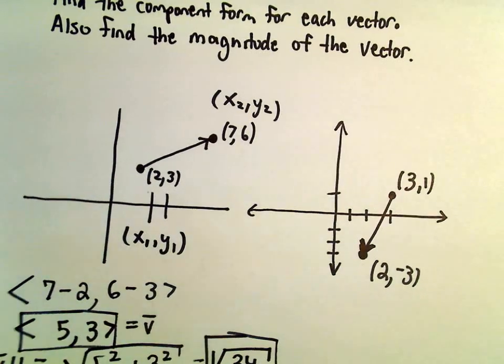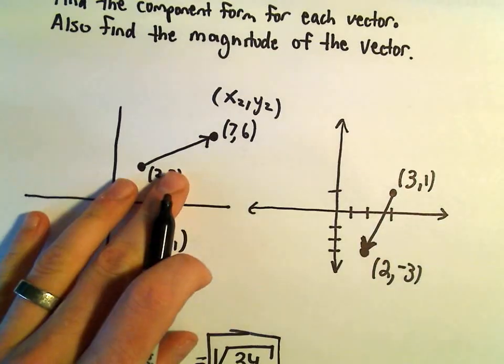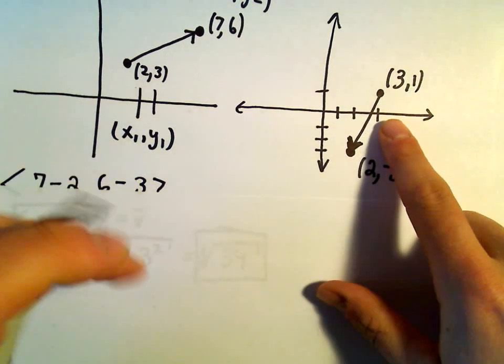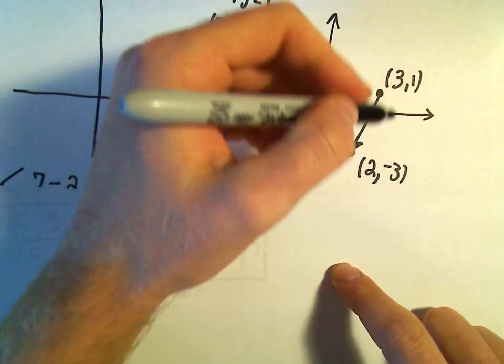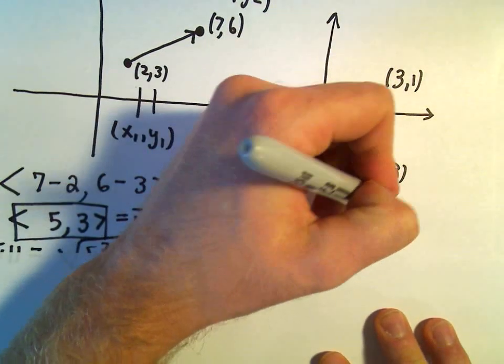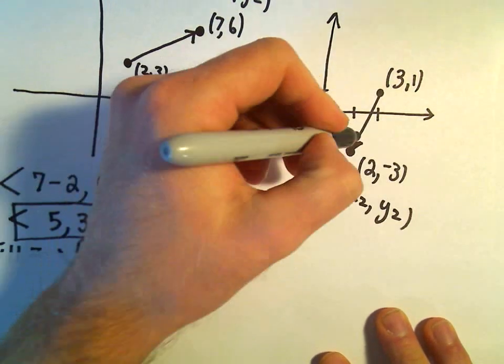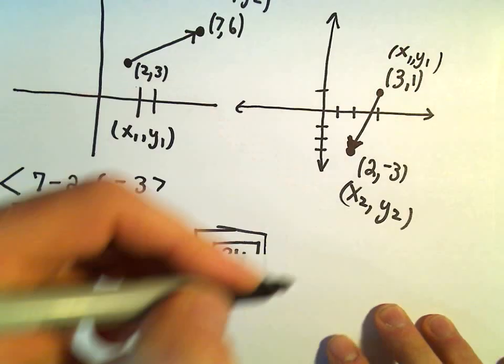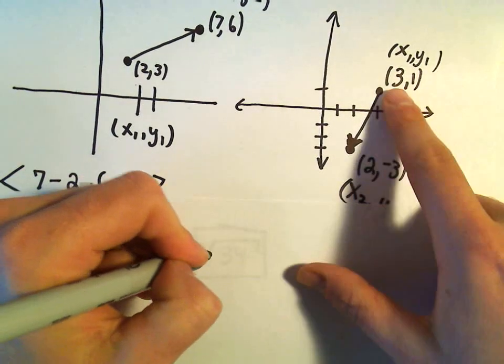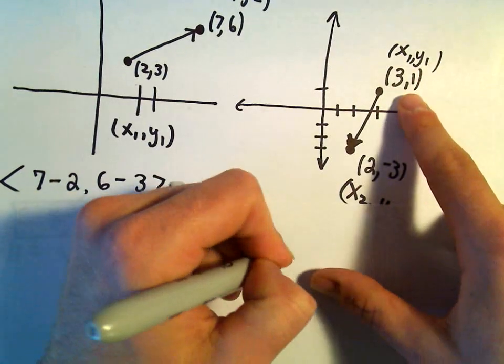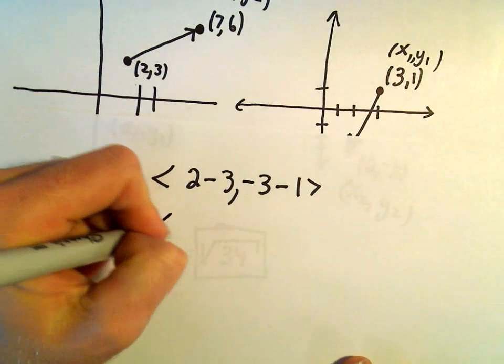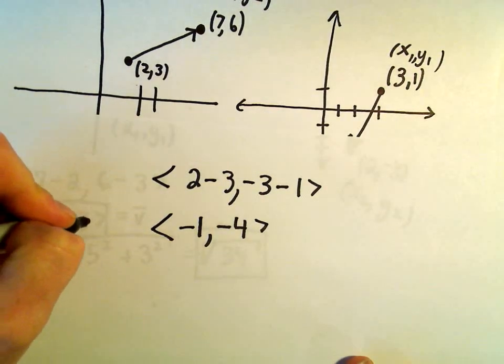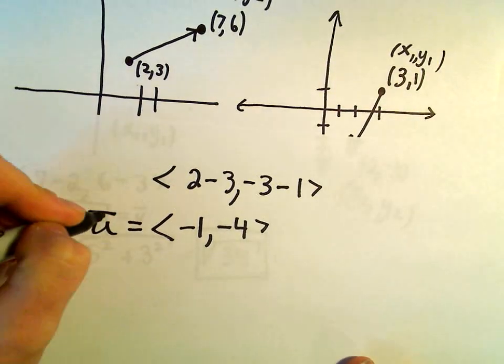Let's do the same thing for this other example. I think we can grab another sheet of paper, give ourselves a little more room. So if we do the same thing, to find the component form we'll take—notice now it stops at the point at the bottom. It stops wherever the arrow is pointing at. So let's see, now we'll do 2 minus 3, and then we'll do negative 3 minus 1. Well, 2 minus 3 is negative 1, negative 3 minus 1 is negative 4. So that's going to be the component form, and maybe I'll label that as vector u.